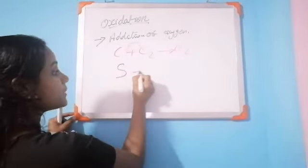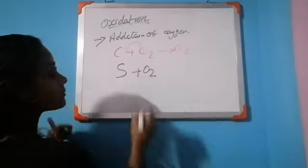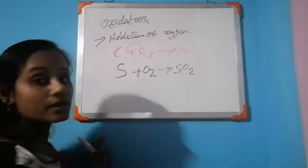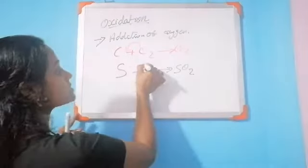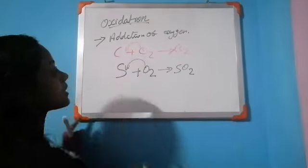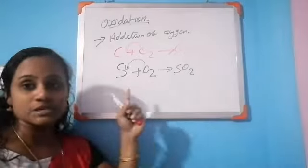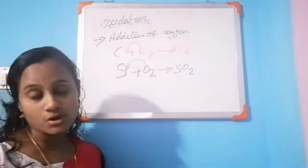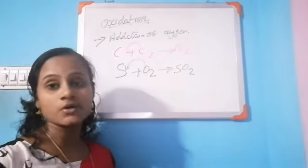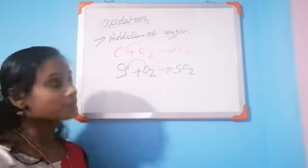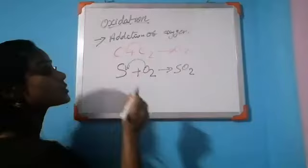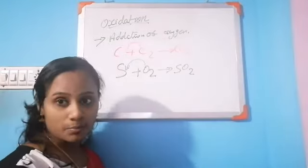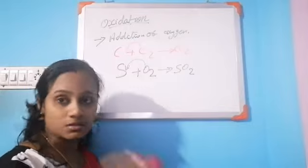Sulfur plus oxygen to form sulfur dioxide. Here oxygen is added to sulfur to form sulfur dioxide. So this is also an addition of oxygen, so addition of oxygen is an oxidation. Oxygen is added to one element or any compound to form new oxide compounds — that is called an oxidation reaction.